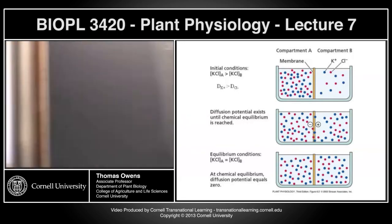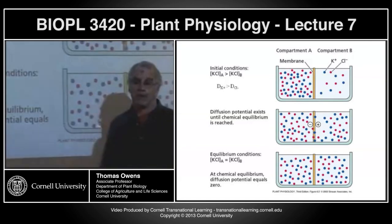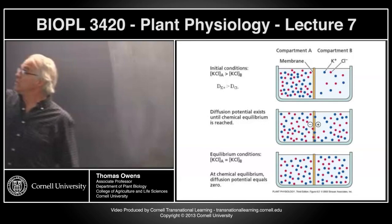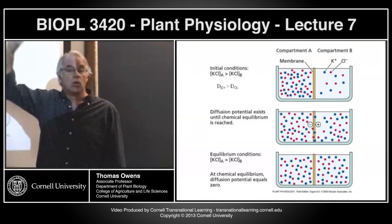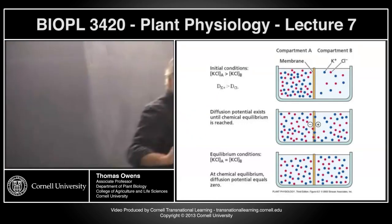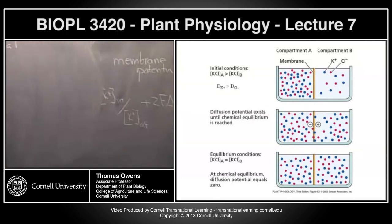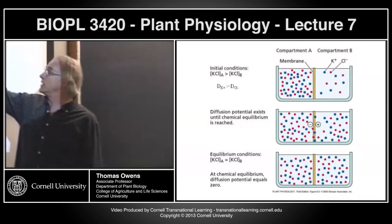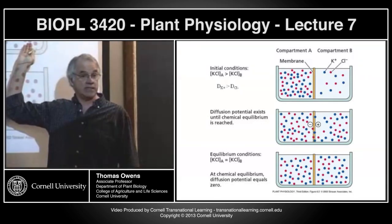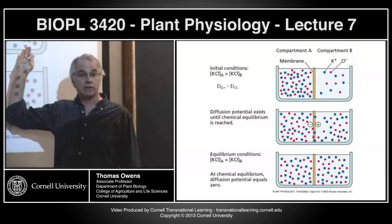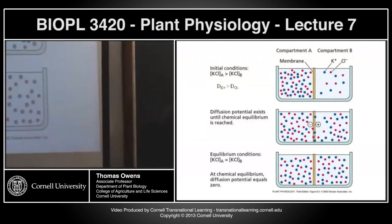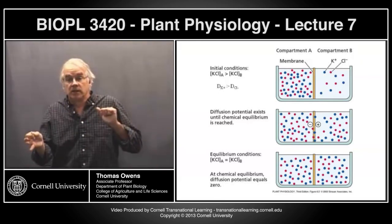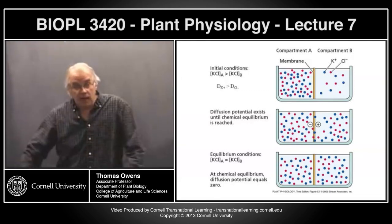The diffusion potential arises from differential permeability of the membrane to charged species. Once we generate this membrane potential, what is the consequence for subsequent ion transfer? This membrane potential decreases potassium movement (since positive charge on that side makes the electrical gradient unfavorable for potassium) and increases chloride movement. So the diffusion potential slows down the faster-moving species and speeds up the slower-moving one.